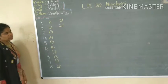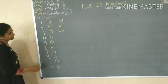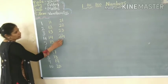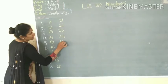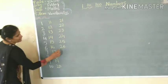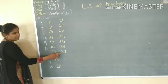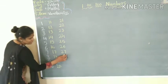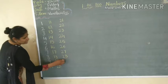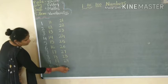Then what comes after 22? After 22 is 23. After 23 is 24. After 24 is 25. After 25 is 26. After 26 is 27. Then what comes after 27? 28. After 28 is 29, and after 29 is 30.